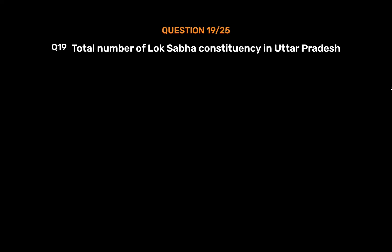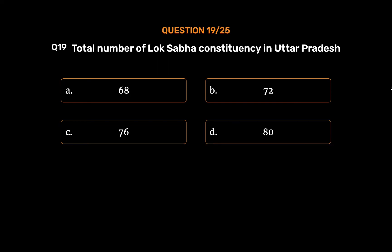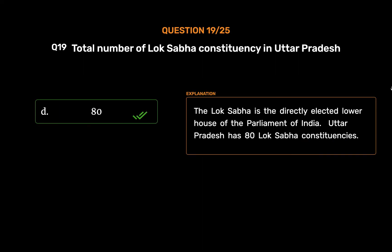Question No. 19: Total number of Lok Sabha constituencies in Uttar Pradesh. Option A: 68. Option B: 72. Option D: 80. The correct answer is Option D: 80. The Lok Sabha is the directly elected lower house of the parliament of India. Uttar Pradesh has 80 Lok Sabha constituencies.